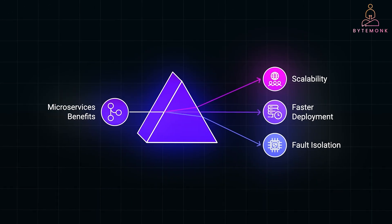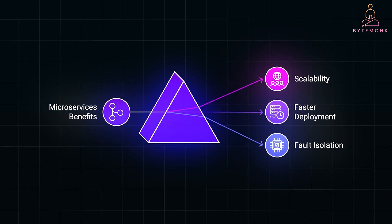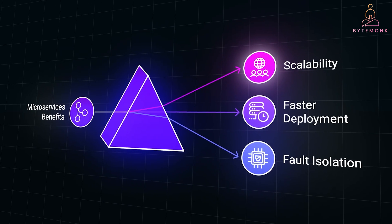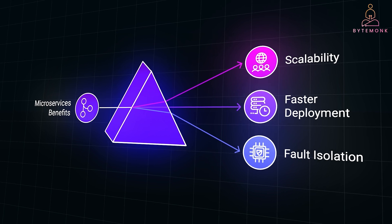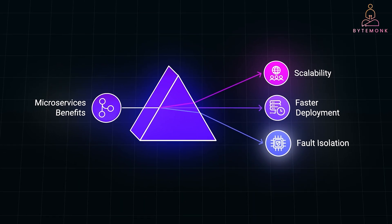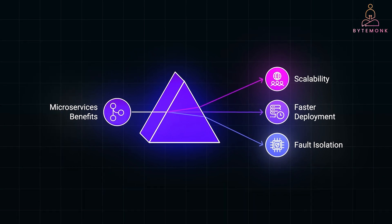Here are the key benefits of moving to microservices. You can scale only the services that need more resources, like scaling the payment processing system during peak hours. Teams can deploy new features or updates to their services without waiting for the entire app to be updated. And if one microservice fails, the rest of the system keeps running, which improves reliability.